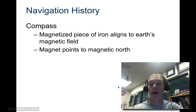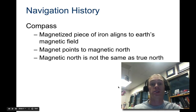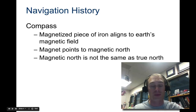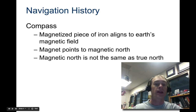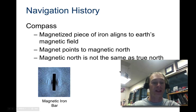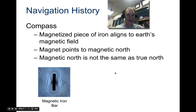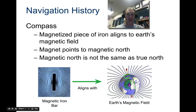The compass always points to magnetic north, which is not necessarily the same as true north. Because of the tilt of the Earth, magnetic north is off by a few degrees. But it was still used very effectively for navigation, and people still use it today.